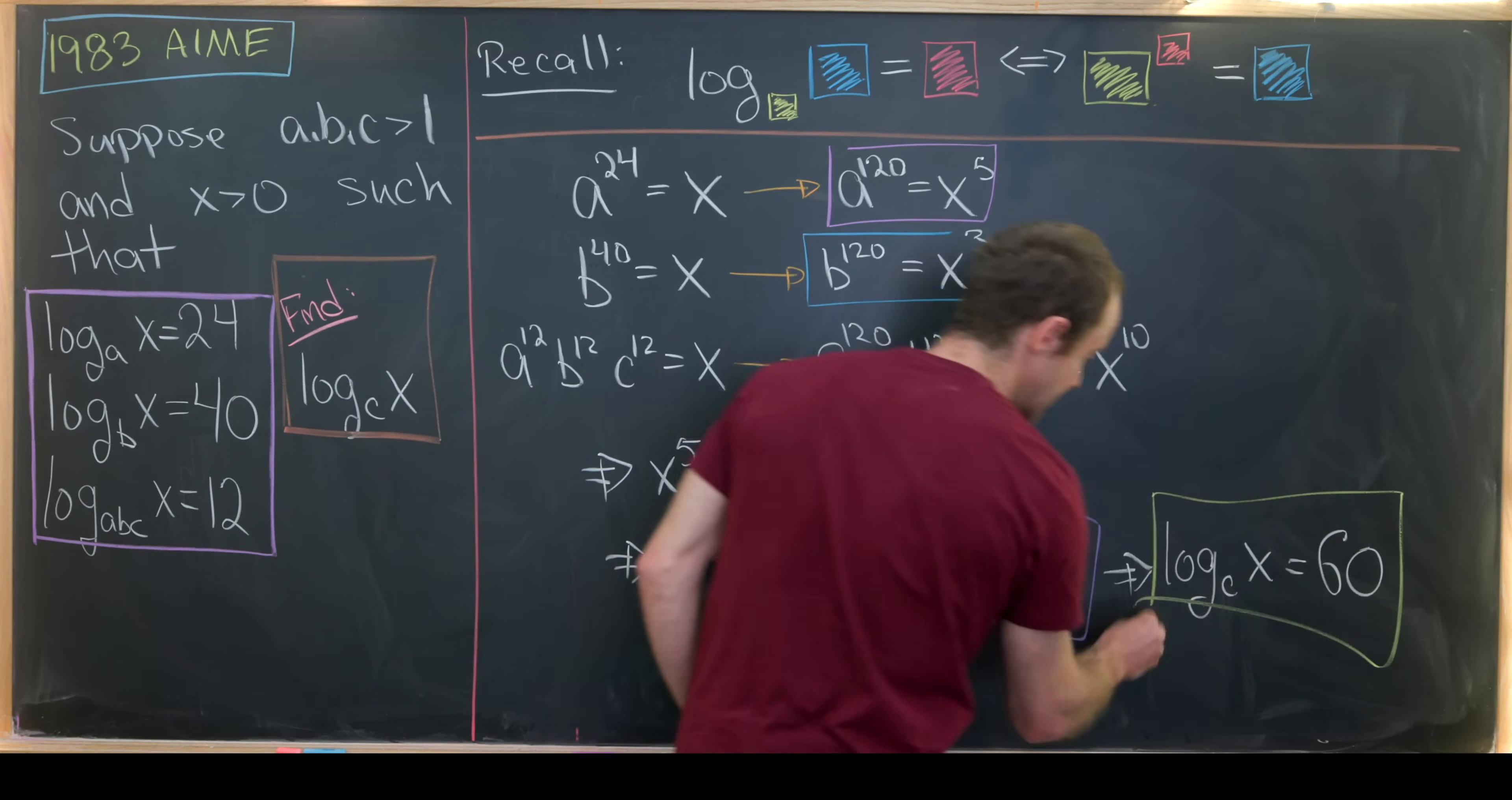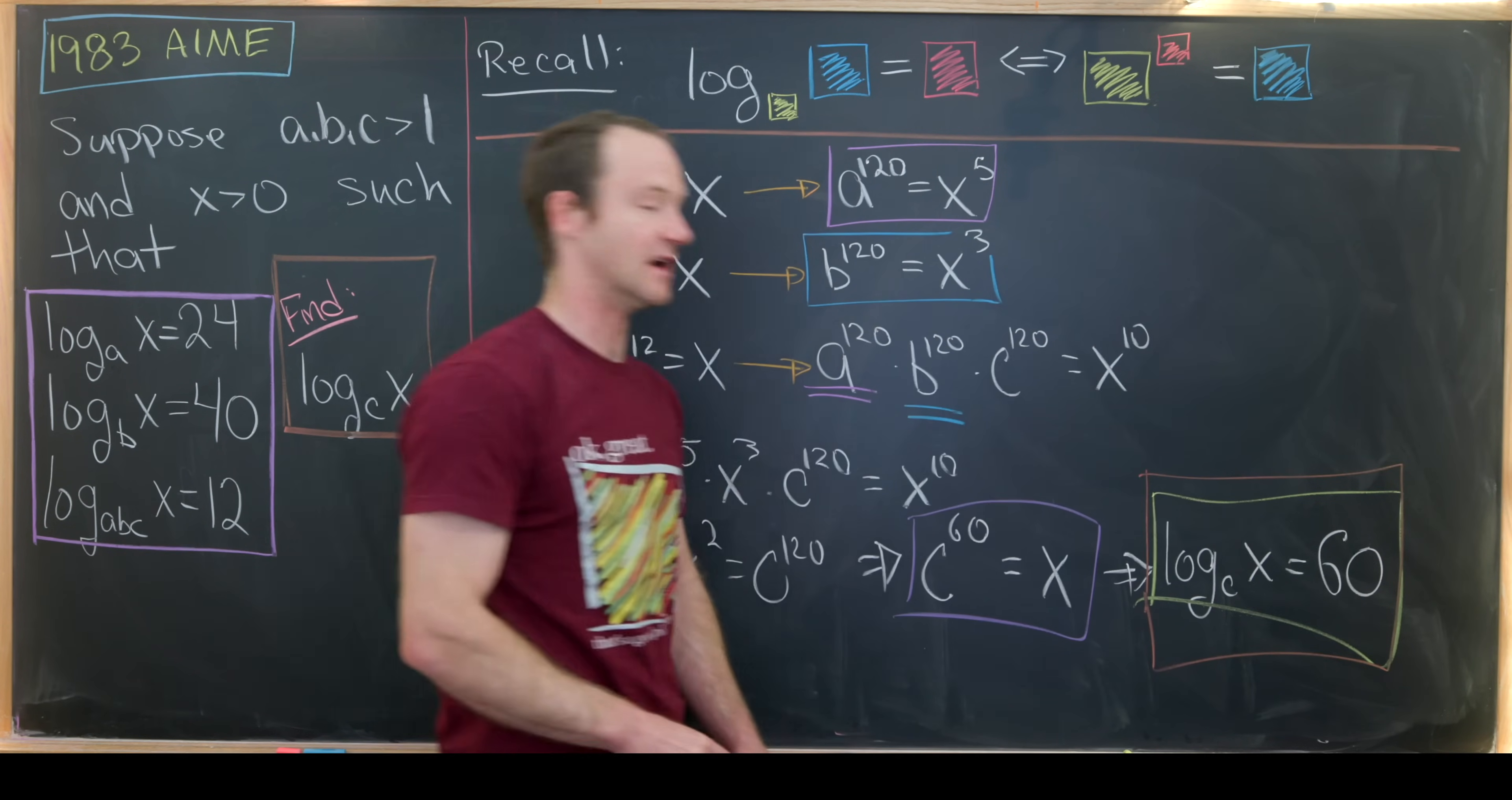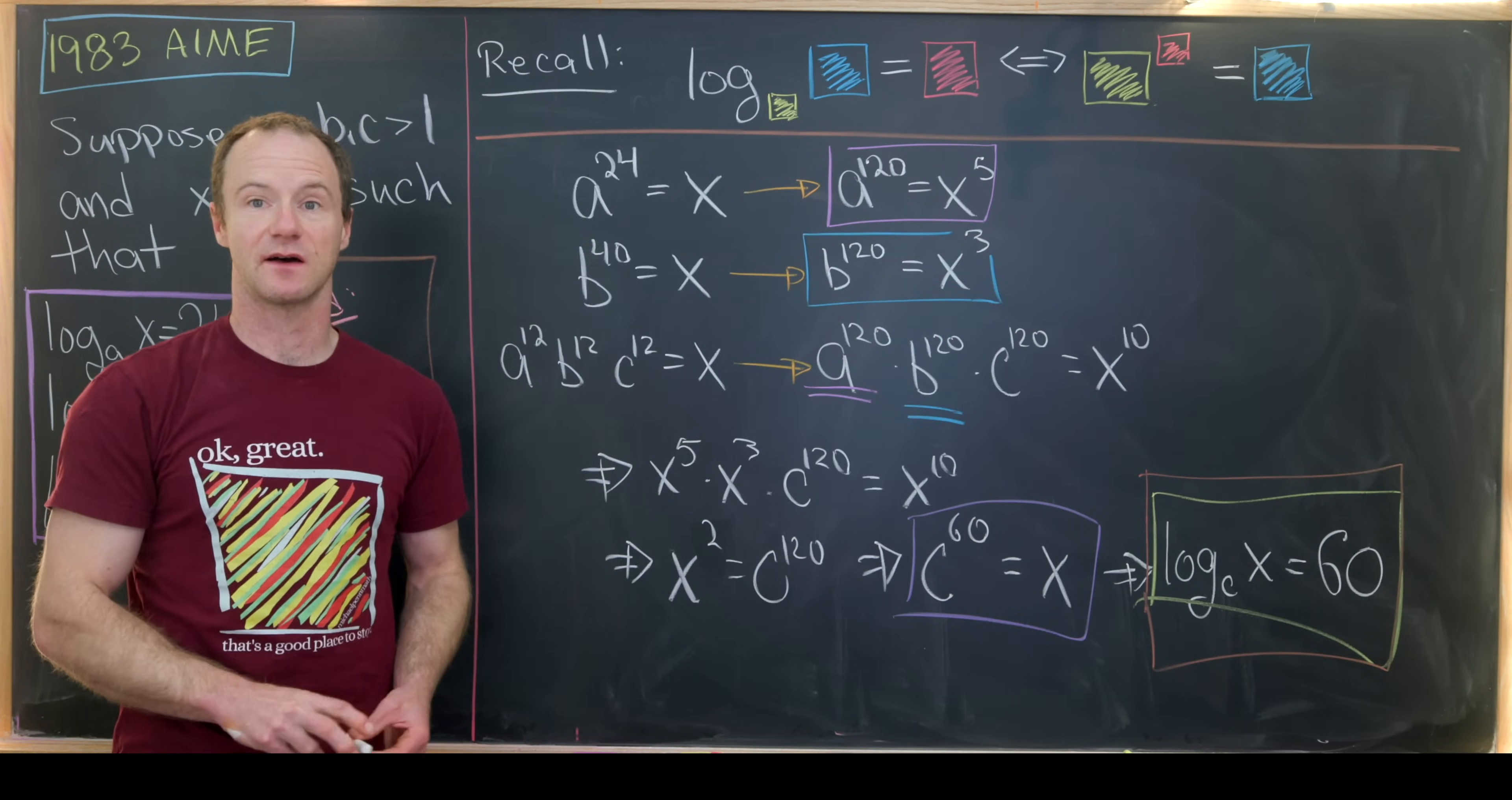So this tells us that the log base C of X equals 60, which indeed was our final goal, to find the log base C of X, and we have done it. And that's a good place to stop.